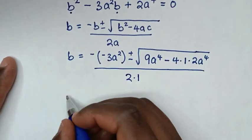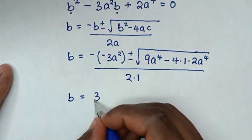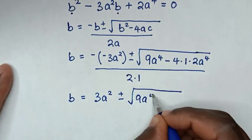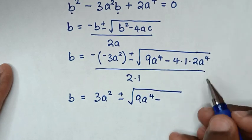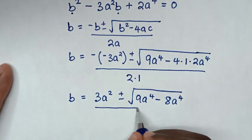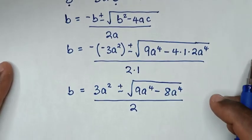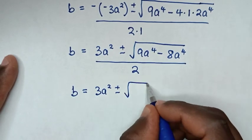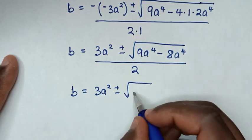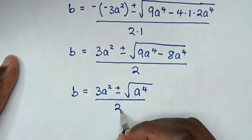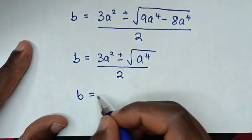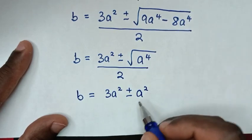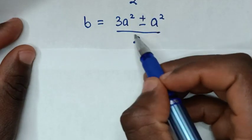Simplifying: b equals 3a² plus or minus square root of 9a⁴ minus 8a⁴, all over 2. That gives b equals 3a² plus or minus square root of a⁴, and since the square root of a⁴ is a², we have b equals (3a² ± a²) over 2.